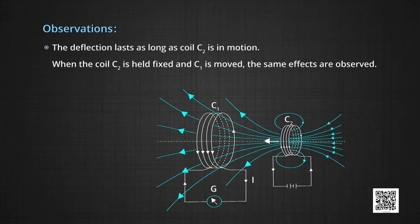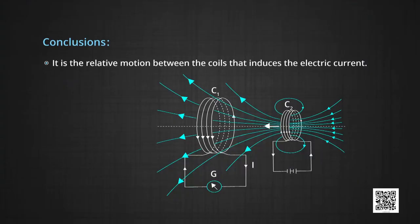When coil C2 is held fixed and C1 is moved, the same effects are observed. Again, we can conclude that it is the relative motion between the coils that induces the electric current.